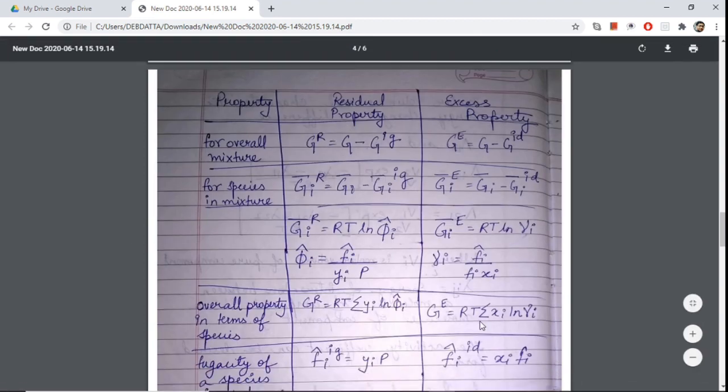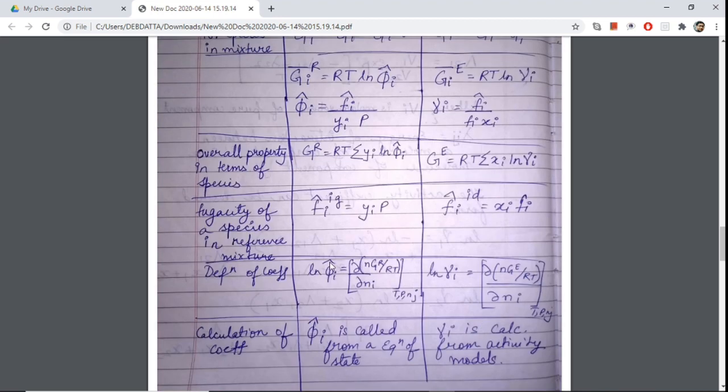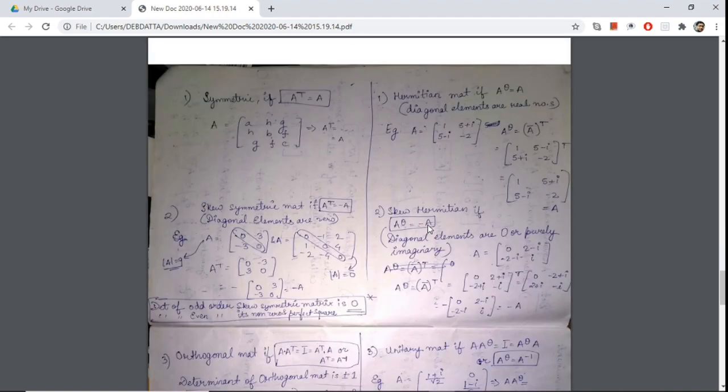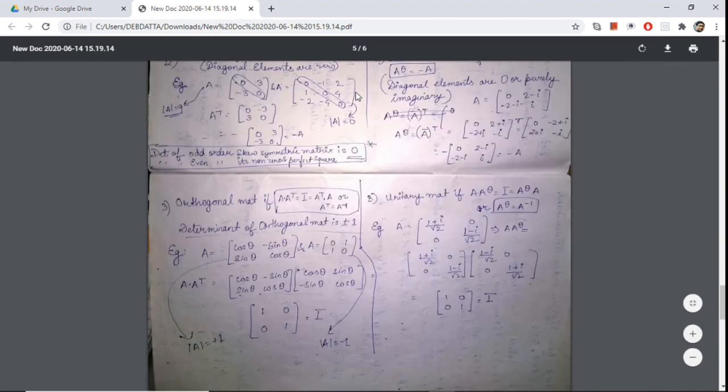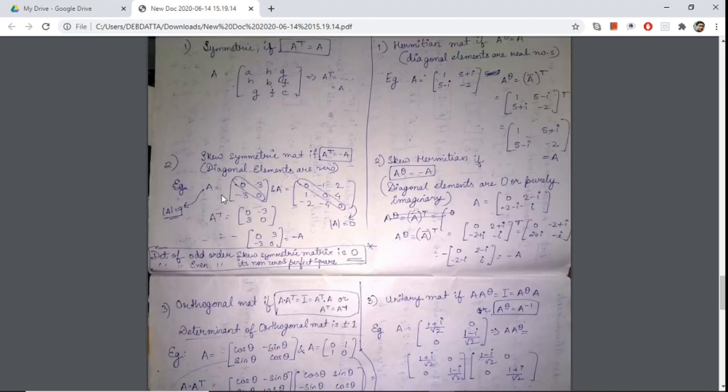So property, residual property, and excess property. This is one example of how things can be made simpler. As soon as you revise, as soon as you see this table, everything will be recapitulated in your mind and you will be remembering all the concepts that you forgot. This is very helpful. Try to make as many tables as possible wherever you have a lot of formulas. Similar thing I did with maths. I made a table comprising two pages. I made a table like this horizontally, from the chapter matrices. These chapters in mathematics have a lot of formulas, so I made this type of notes and it really helped me.